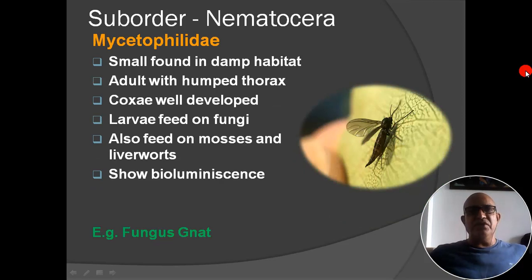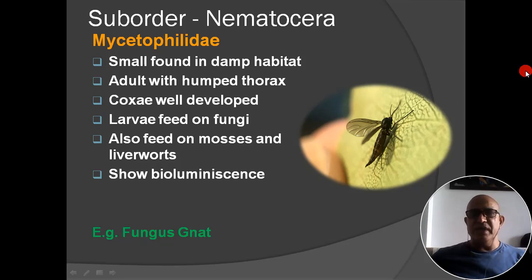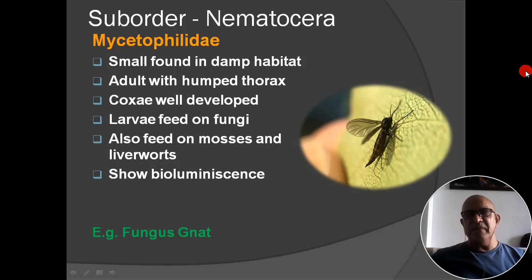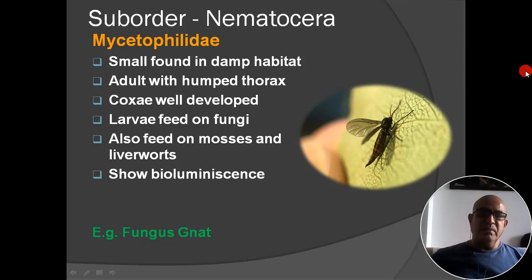Next family: Mycetophilidae. Insects are small, found in damp habitats; adults have humped thorax; coxae well developed; larvae feed on fungi, also feed on mosses and liverworts and epiphytes. They show bioluminescence — the insect contains luciferin, and when luciferin is oxidized by luciferase enzyme, the energy released is not converted to ATP but is instead converted into light. This phenomenon is called bioluminescence. Example: fungus gnat.